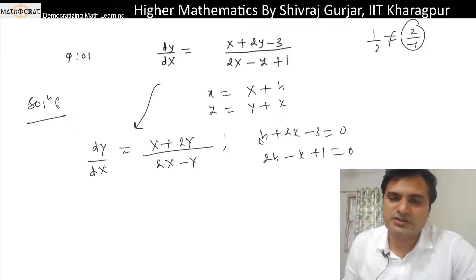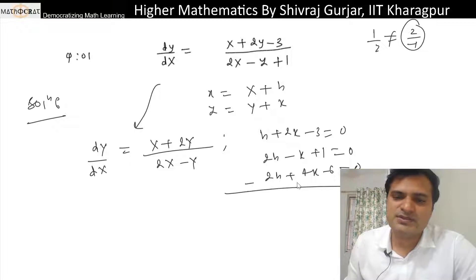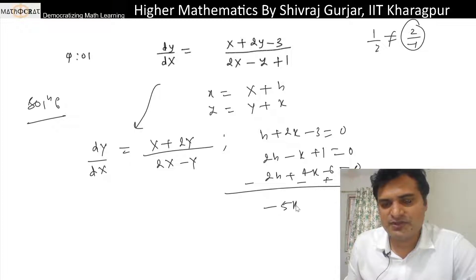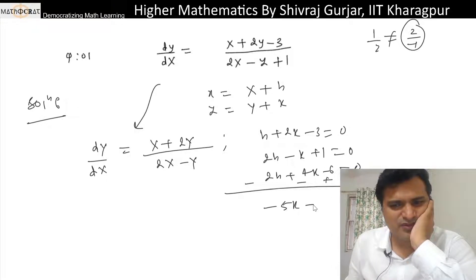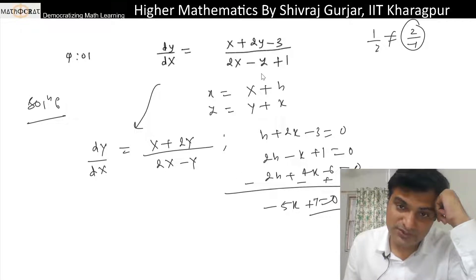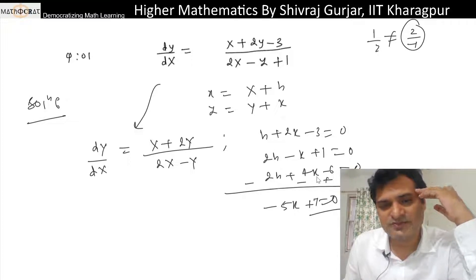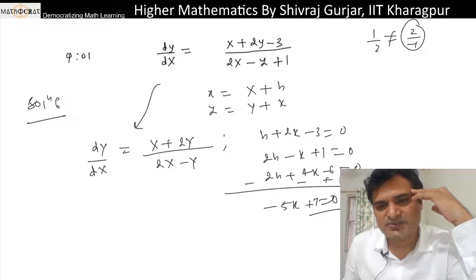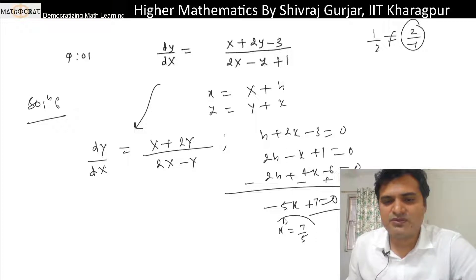Now solving these: multiply the first equation by 2: 2h + 4k - 6 = 0. Subtracting the second equation, this gives -5k + 7 = 0, so k = 7/5. From k = 7/5, we get h = 3 - 2k = 3 - 14/5 = 15/5 - 14/5 = 1/5. So h = 1/5.